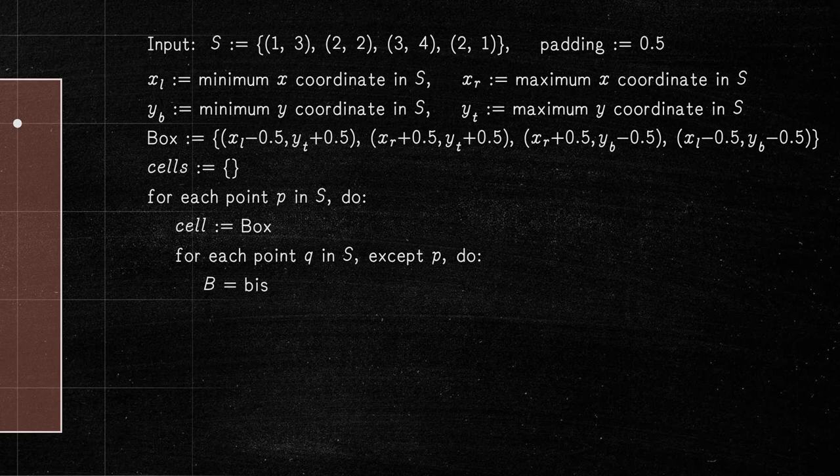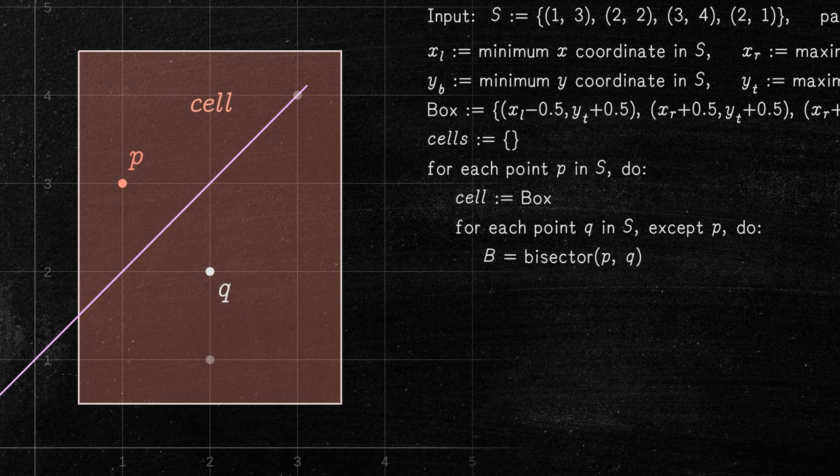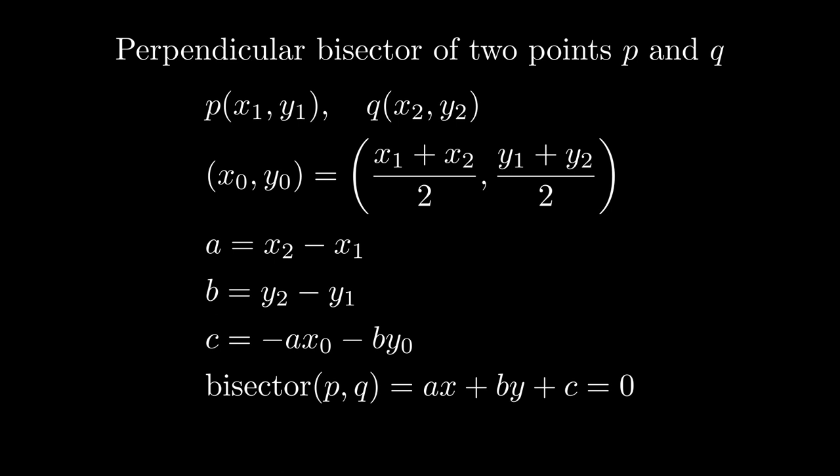For each point Q different from P, create a perpendicular bisector of the segment connecting Q and P. This bisector is obtained using this formula.